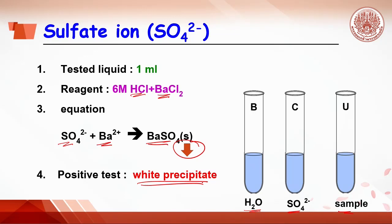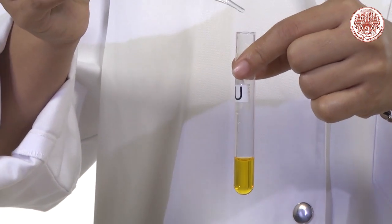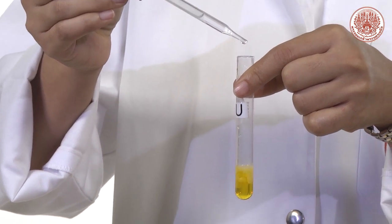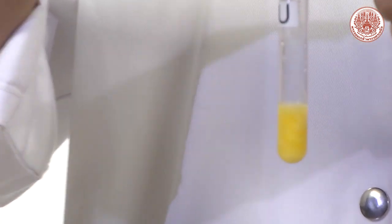The positive test will be white precipitate. Now, look carefully after barium chloride is added into the U tube. If the sample contains sulfate ion, white precipitate will be formed.